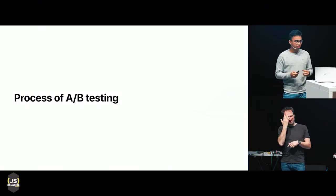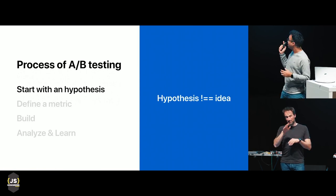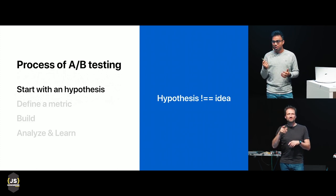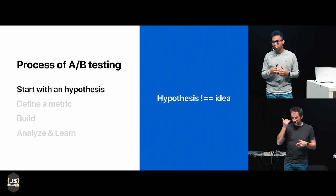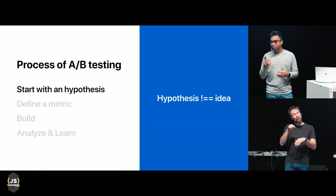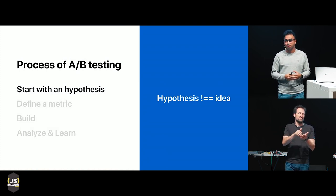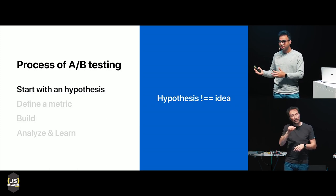Now the process of A/B testing. Step one: start with a hypothesis. Ideas are cheap — they don't come with limitations and don't help you prove whether a feature is good or not. A hypothesis, on the other hand, comes with a limitation and is based on your business metrics. For example, taking the green button example: I'm running this experiment because I assume users like green, and I can only measure this based on how many people click sign up in A versus B. That's a proper hypothesis. The idea was just to change the button color to green.